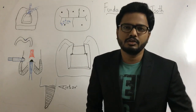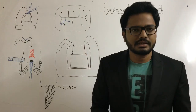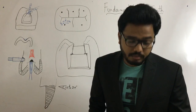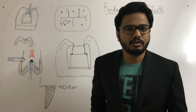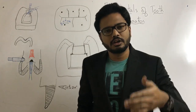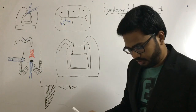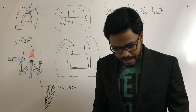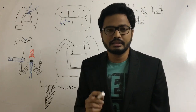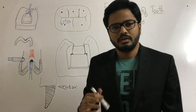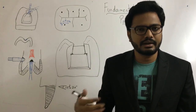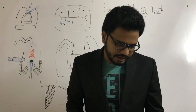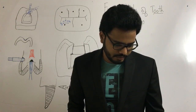Primary retention for amalgam is occlusal convergence. For composite, primary retention is through the bonding concept — micro-mechanical retention. Secondary retention involves grooves, slots, and pins. Regarding base indications, refer to the remaining dentin thickness video — there are criteria based on remaining dentin thickness: if 1.5–2 mm, go for base placement; if less than 1.5 mm or 0.5–1.5 mm, different criteria apply. Liner indications are the same — refer the video for full details.